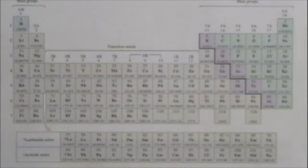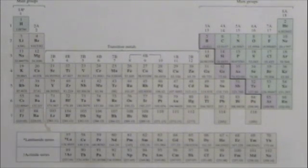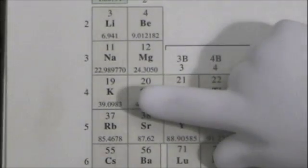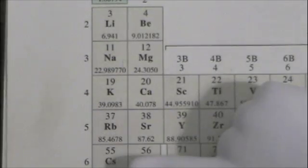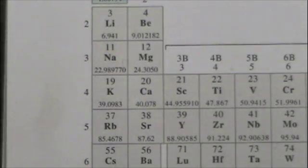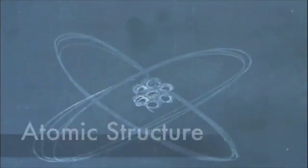This brings us to the second part of the pattern, which has to do not with rows, but with columns. All the elements in a given column have similar chemical properties. So potassium is chemically similar to sodium and lithium, and also to rubidium and cesium. Now, why should that be? Magic? Nope, not magic. Atomic structure.